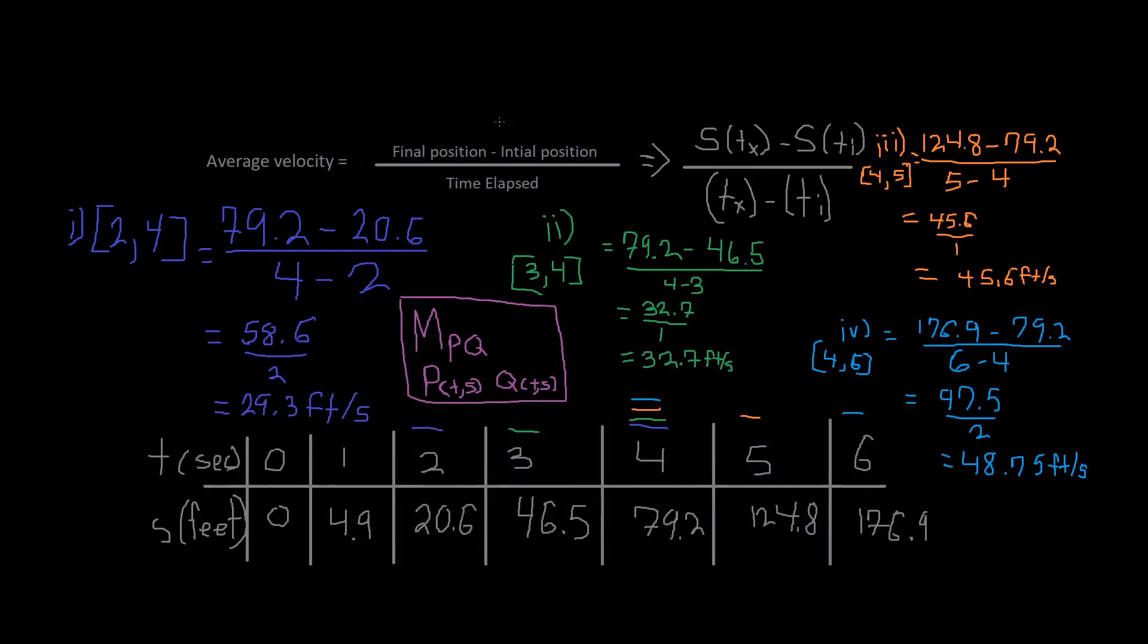This is the point slope form. So we have this right here again. Here's our first time interval, 2 to 4. So right here 2 and 4. Here's the final position, here's the initial position.